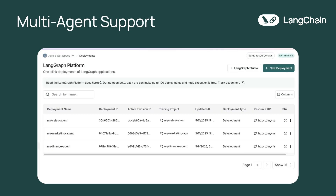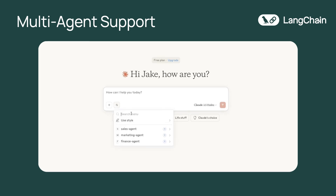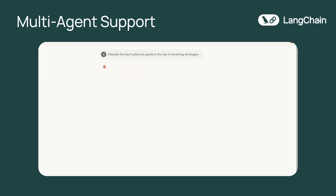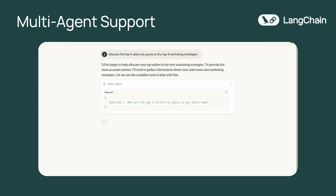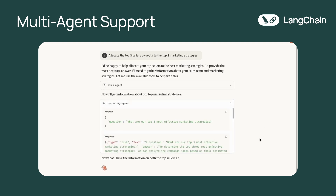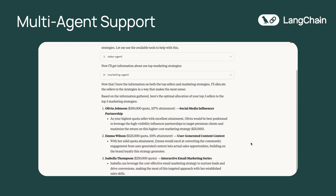Just as we did with the finance agent, I've gone ahead and deployed a sales agent and a marketing agent to also use as tools in my MCP client. I've updated Claude Desktop's config with the API URLs of the two new agents. Clicking the search and tools button, we can now see our sales agent and marketing agent registered as tools. Let's ask a question that will engage multiple AI agents. We can see that both the sales agent and the marketing agent were called, giving Claude the context it needed to answer our question.